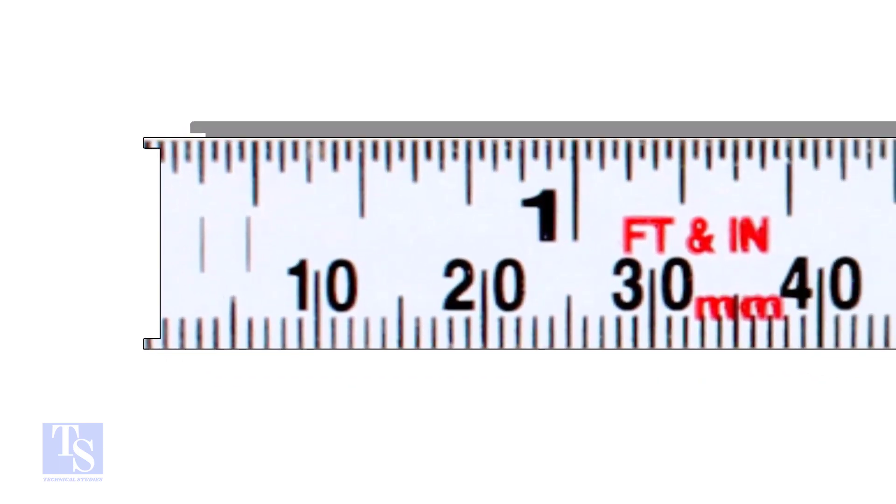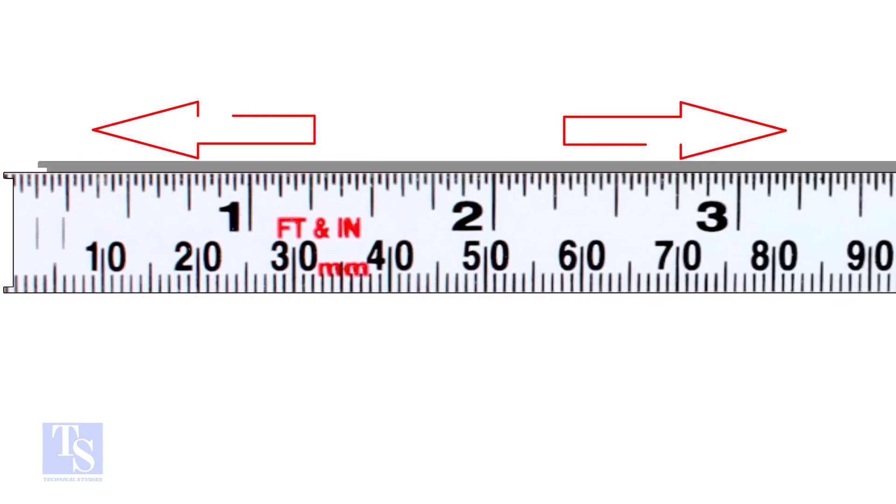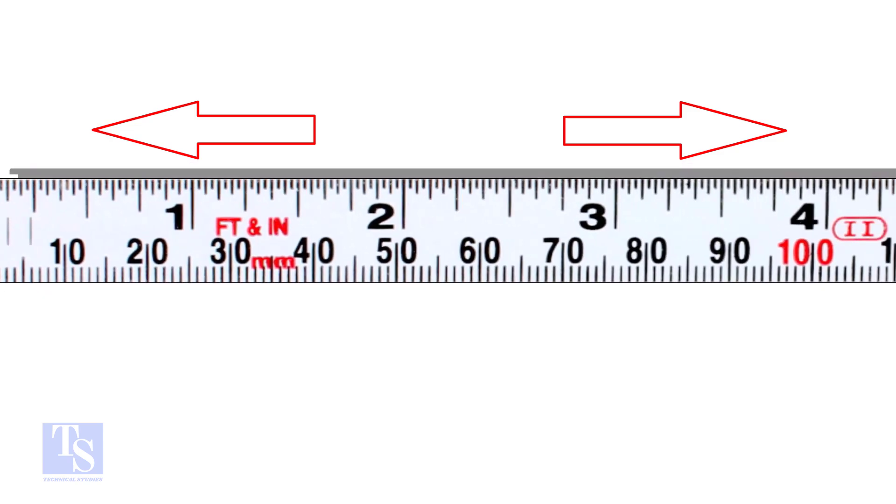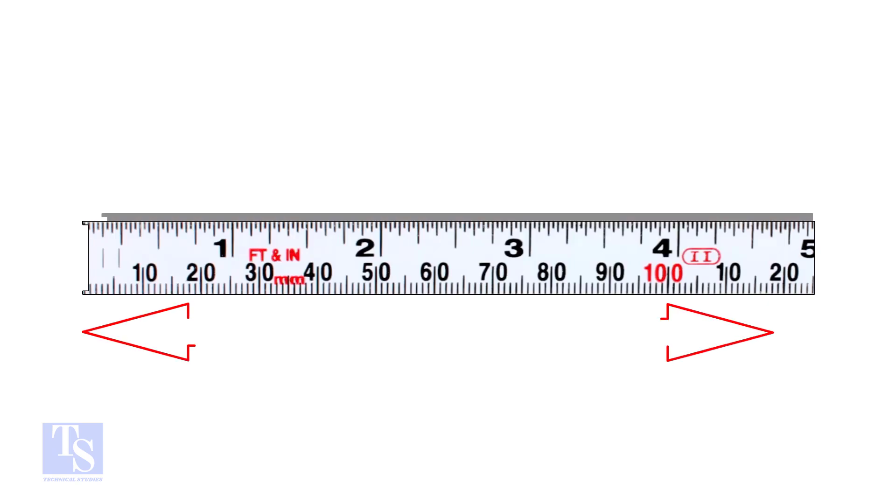Let us go to the subject now. Usually, on a measuring tape, there are two types of units: the imperial unit system, inch and foot, and the metric unit system, millimeter, centimeter, and meter.